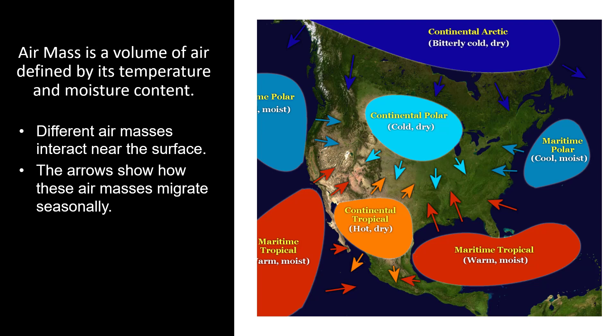The northeastern and northwestern U.S. have a maritime polar cool moist air mass offshore. The southeast U.S. has a maritime tropical warm moist air mass over the Gulf of Mexico. A continental tropical hot dry air mass resides over the desert southwest and much of Mexico. Another maritime tropical air mass is west of Mexico. The arrows show how these air masses migrate seasonally.